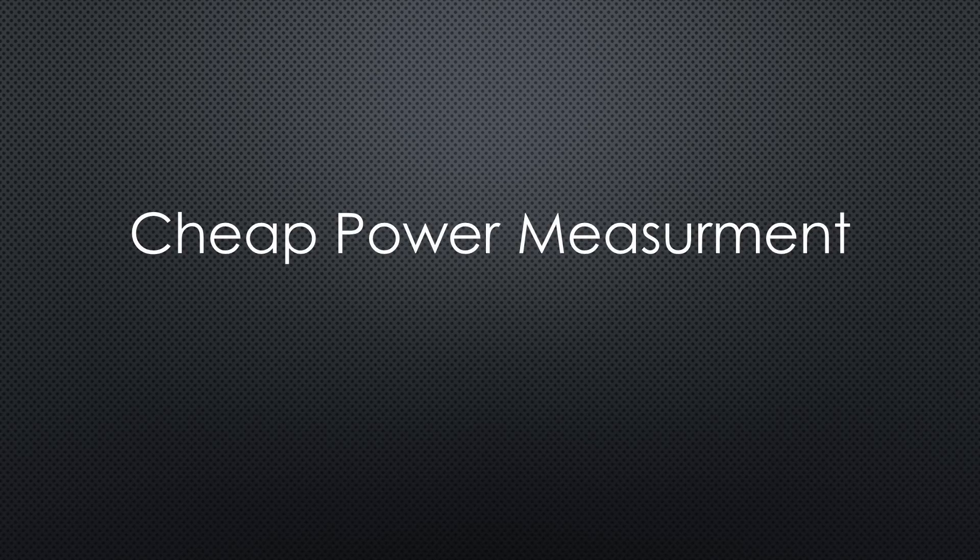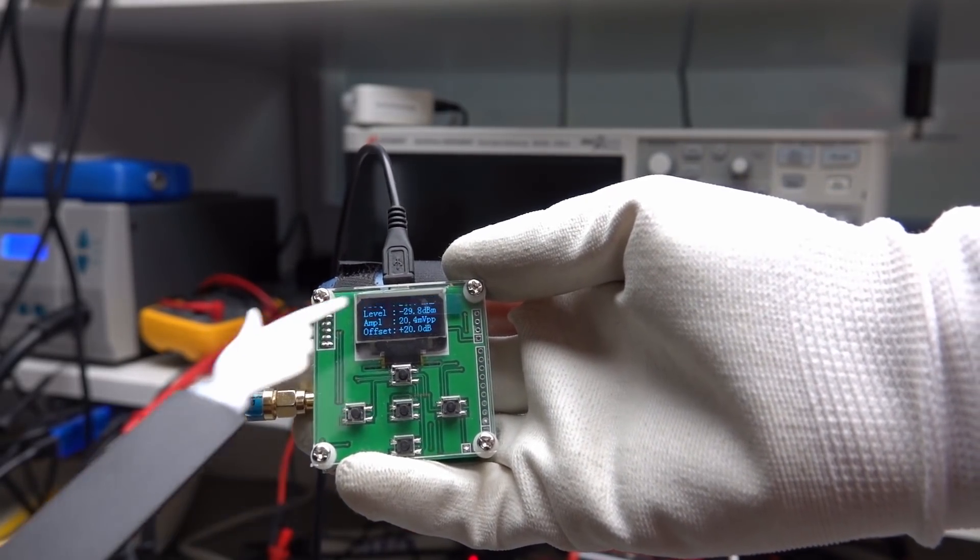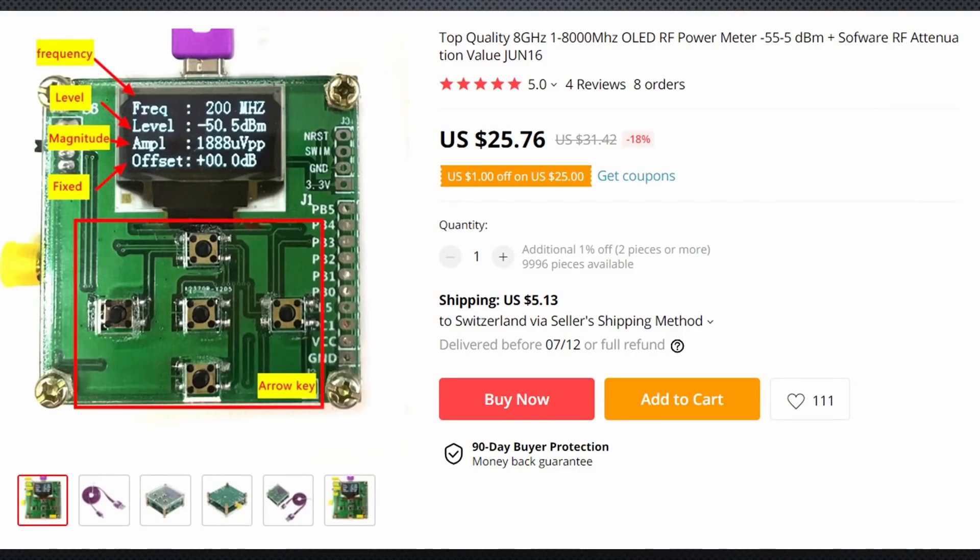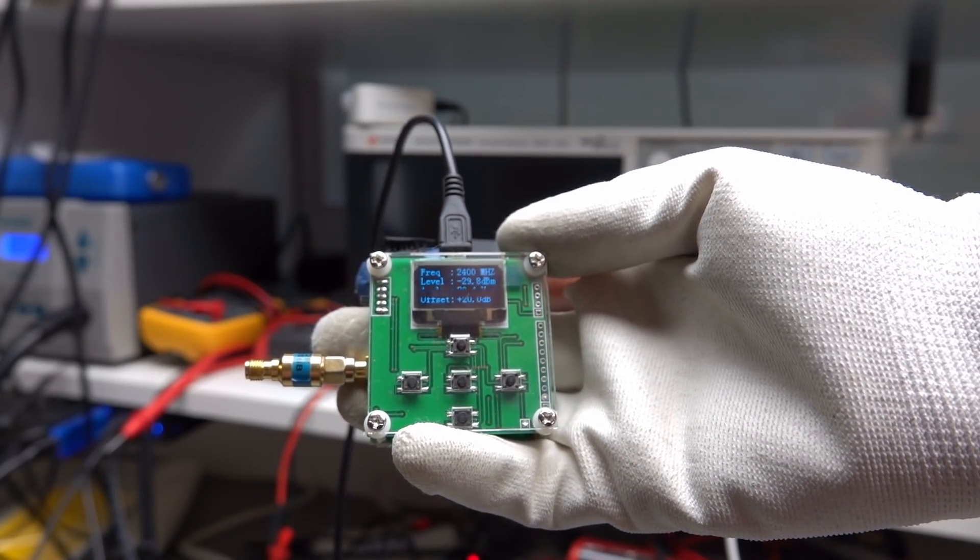Let's come back to my promise from the beginning of the video. I promised you a cheaper way to measure power. This is a power meter for around $30. Its range is from 1 MHz to 8 GHz. Incredible. But pay attention. It is only specified up to minus 5 dBm.